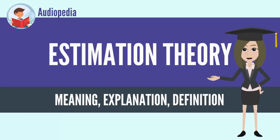Estimation theory is a branch of statistics that deals with estimating the values of parameters based on measured empirical data that has a random component. The parameters describe an underlying physical setting in such a way that their value affects the distribution of the measured data. An estimator attempts to approximate the unknown parameters using the measurements. When the data consists of multiple variables and one is estimating the relationship between them, estimation is known as regression analysis.